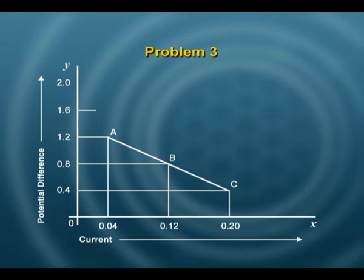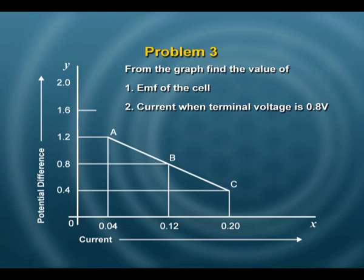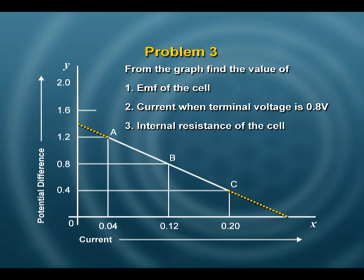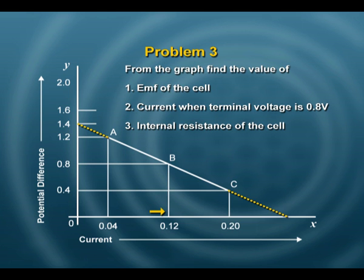Taking another problem: suppose we are given a graph and asked to find the EMF of the cell, the current when the terminal voltage is 0.8 volts, and the internal resistance. We extrapolate the line to see where it touches the y-axis — in this case it is 1.4, so the EMF is 1.4 volts. The slope of the line gives the internal resistance. The current when terminal voltage is 0.8 can be read directly off the graph.